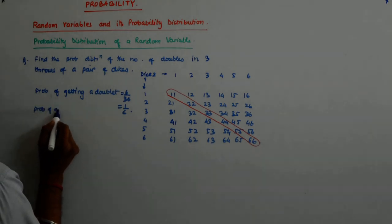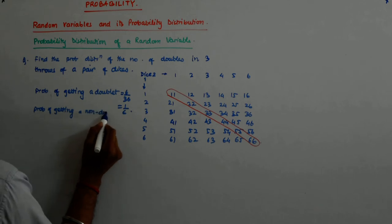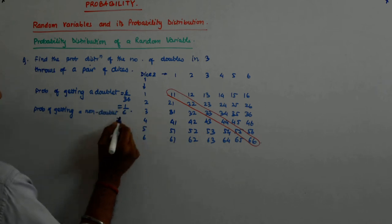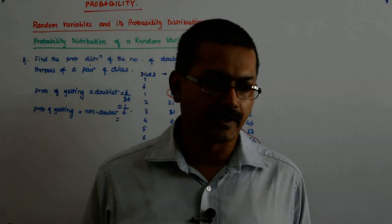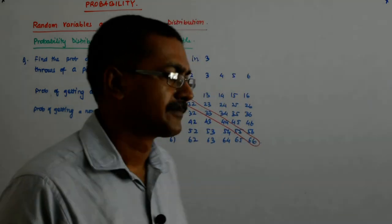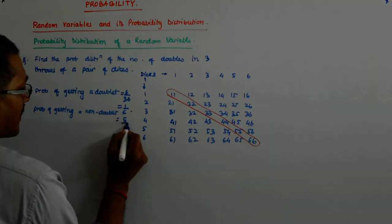Probability of getting a doublet is six by thirty-six, which is one by six. Probability of getting a non-doublet? This is one throw, but let us be sure about one throw then we will go for three throws. That will be obviously one minus one by six. Either you get a doublet or you do not get a doublet. There is no other way. So it is five upon six.